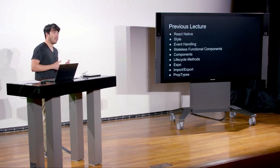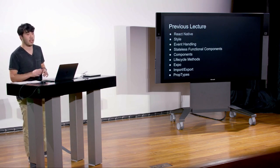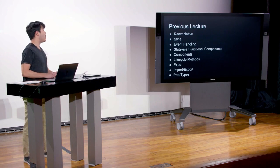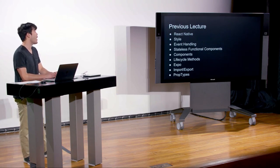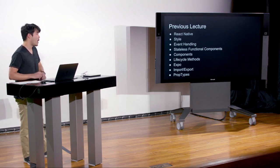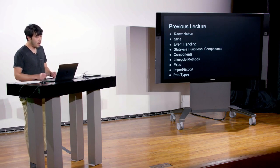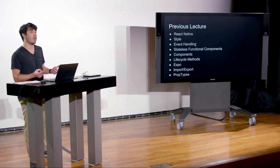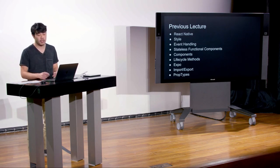We talked about a couple different types of components: stateless functional components, and React components with their life cycles. We looked at Expo, which is a bunch of tools around React Native that allow you to develop much more quickly. We looked at how to import and export things from packages and modules, and lastly we looked at prop types, a library from React that lets you keep track of the different props you pass to different components.